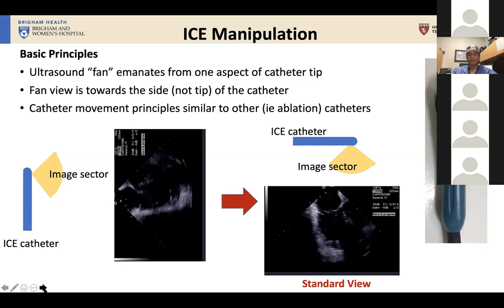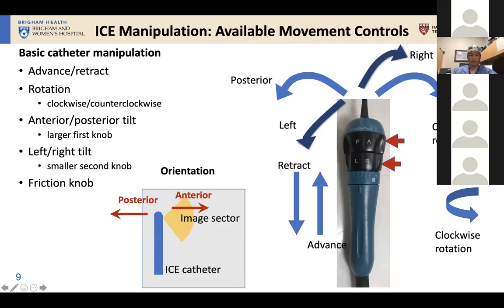In terms of manipulating the catheter, like most catheters you have advancing, retracting, and clockwise or counterclockwise rotation. The added features are anterior and posterior tilt and a left and right tilt, giving you a full range of motion. There's also a friction knob that lets you lock the catheter into position. Anterior is towards the imaging sector and posterior is away from that sector — that's an important thing to keep in mind.